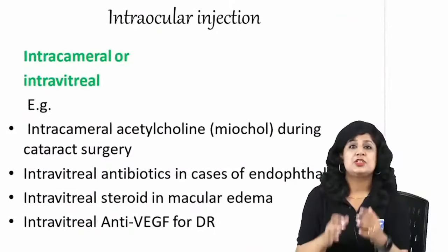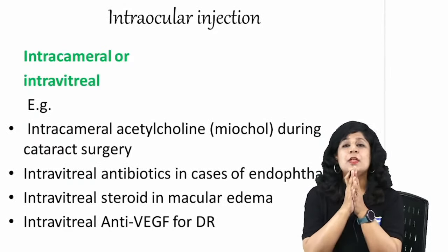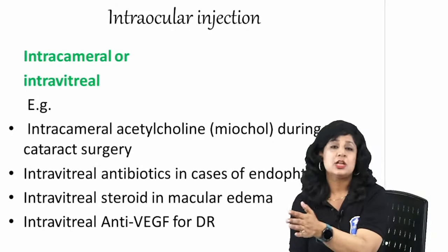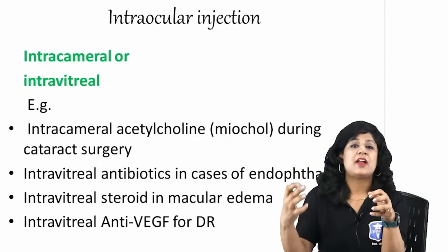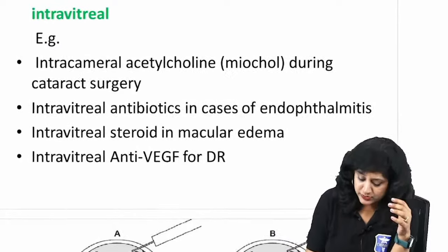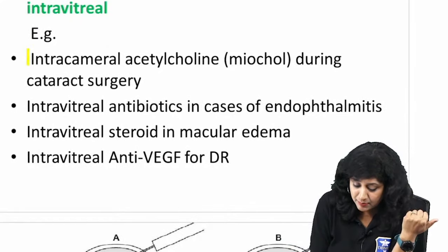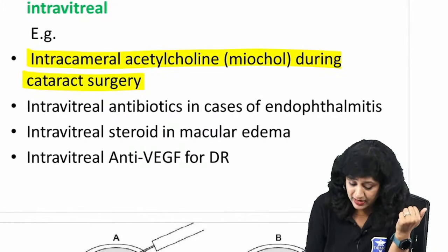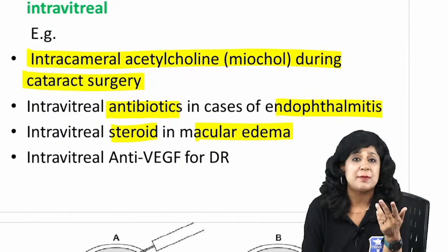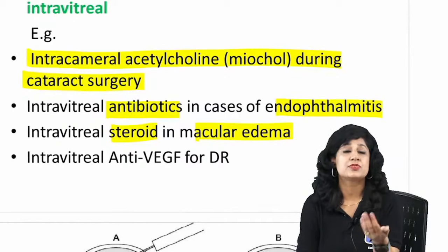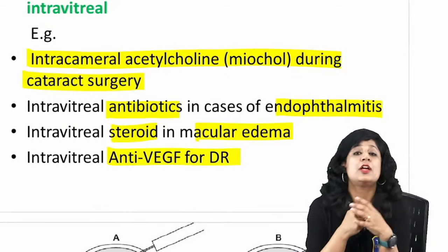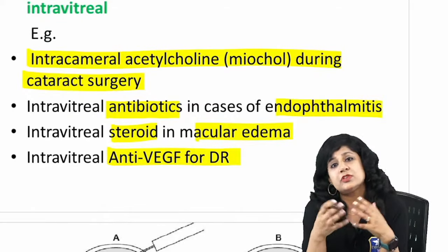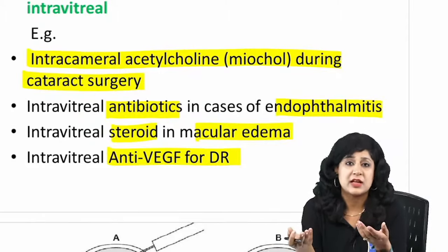Intraocular injections are given directly inside the eye. These are divided into intracameral — into the anterior or posterior chamber — and intravitreal — into the vitreous cavity. Intracameral injections are not used frequently, but intracameral acetylcholine can be given during cataract surgery. Intravitreal injections include antibiotics for endophthalmitis, steroids like triamcinolone for macular edema in diabetic retinopathy, and anti-VEGF agents. Previous exam questions have asked which drugs can be given by the intravitreal route.